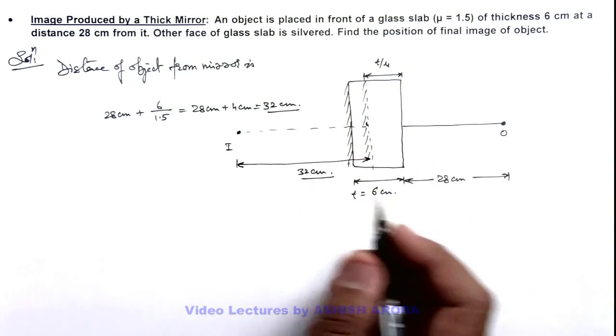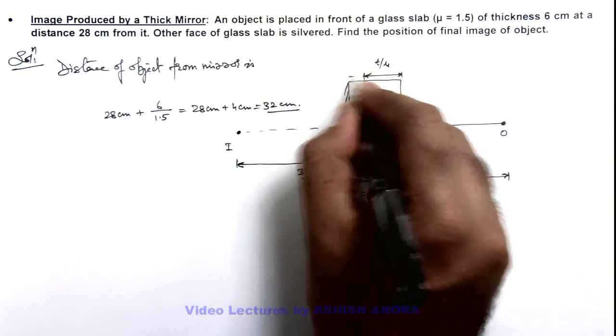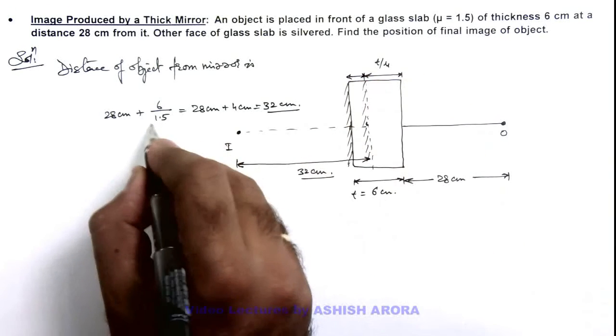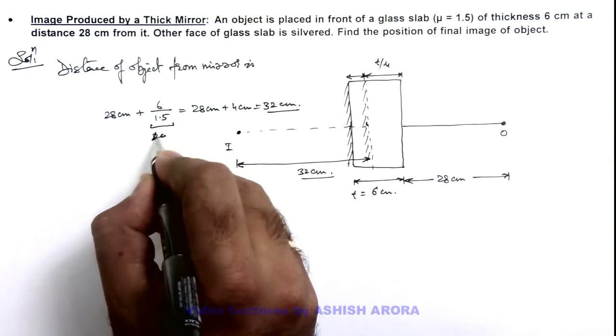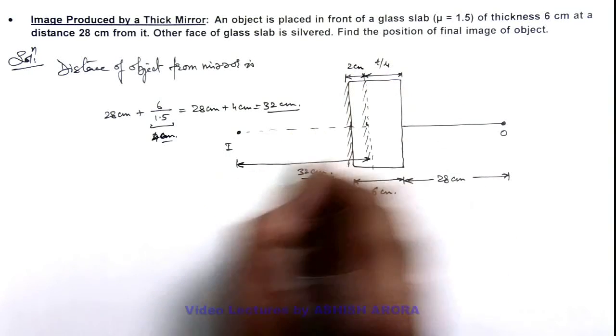If we wish to find out the actual position of the image with respect to the rear face, here we can say this t by μ is 4 centimeters, so this distance is 2 centimeters.